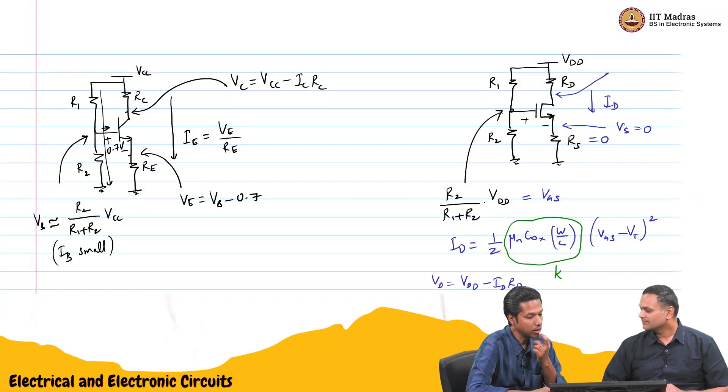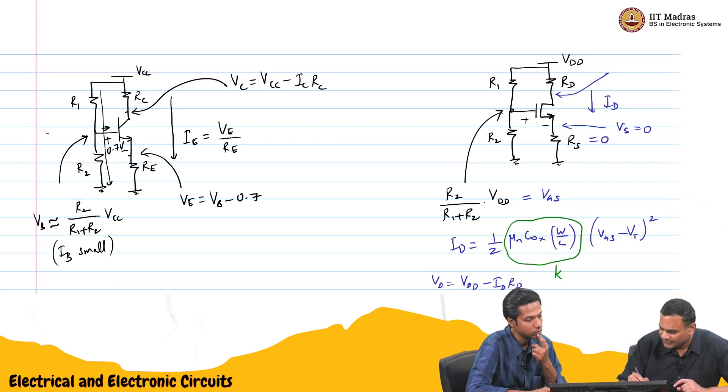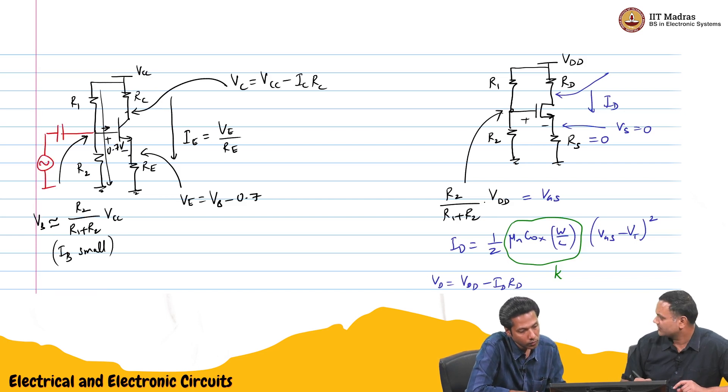Now how will I give input signal? Let me draw the input signal here, I will use this color. In the case of the BJT, we gave the input signal like this, right.